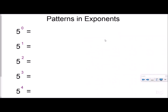Let's take a look at some patterns with exponents. I have the first four exponents written down here, and let's see how the exponent changes things. Any number to the zero power equals one — it could be one million to the zero power, the answer is one. Five to the first power means I have one five and I'm not multiplying by anything, so five to the first power is five. Five to the second power would be five times five, which equals 25.